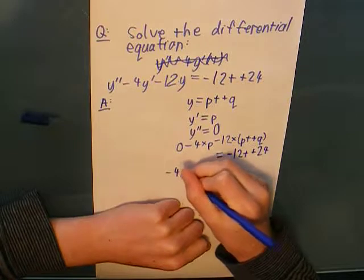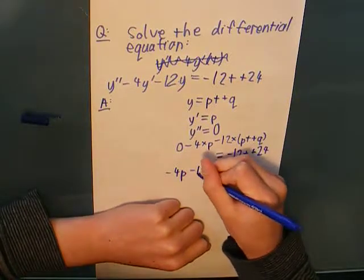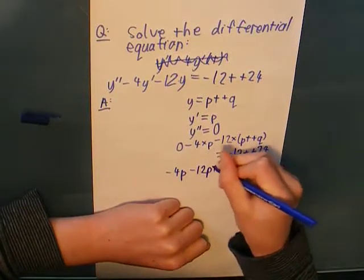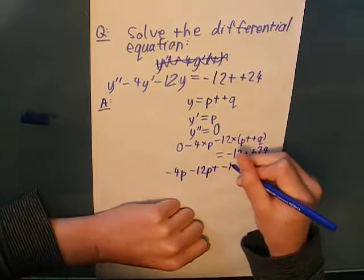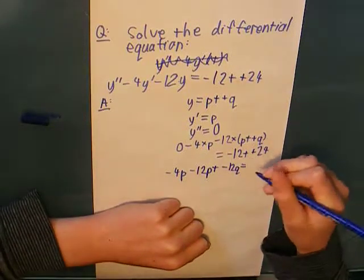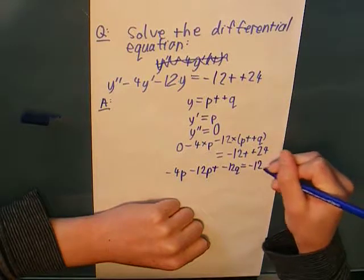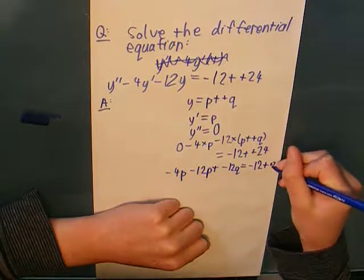So, minus 4p minus 12pt minus 12q equals minus 12t plus 24.